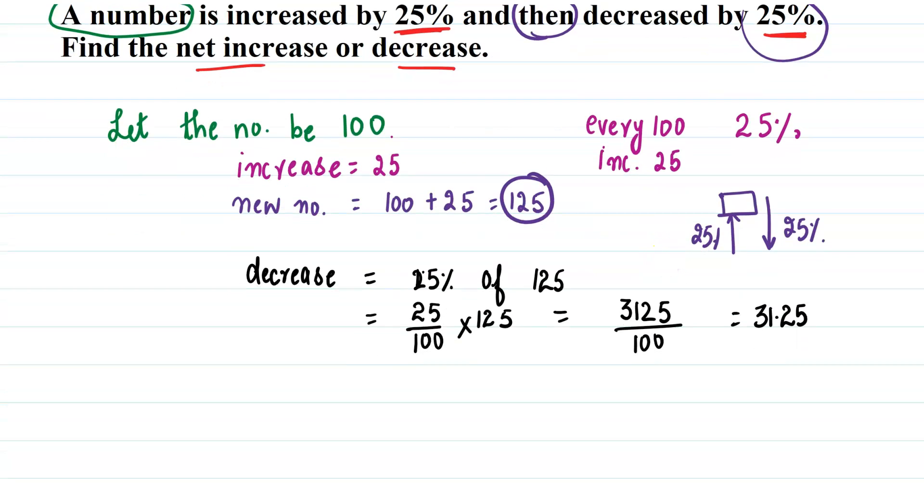So this is the decrease. So we have to decrease the number 125 by 31.25. So let's do that. So now the new number would be 125 minus 31.25. So how much will that be? That would be 93.75.